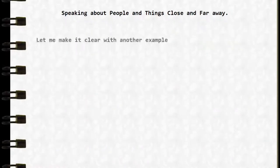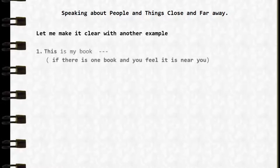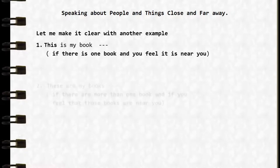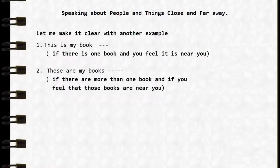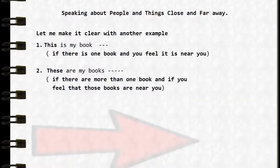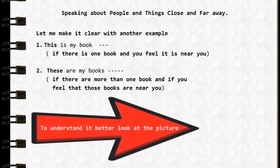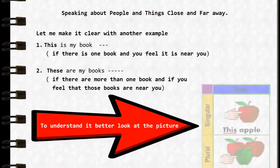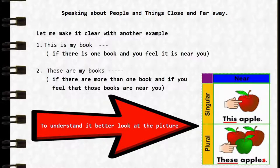Let me make it clear with another example. 'This is my book' — if there is one book and you feel it is near you. 'These are my books' — if there are more than one book and you feel those books are near you. To understand it better, look at the picture: 'this apple' — 'these apples'.